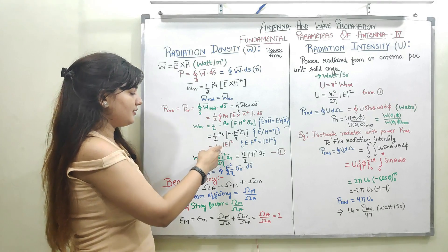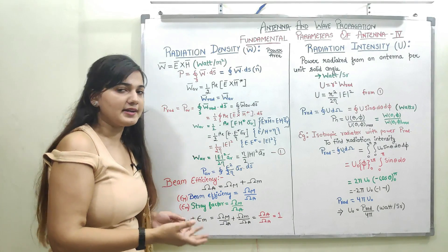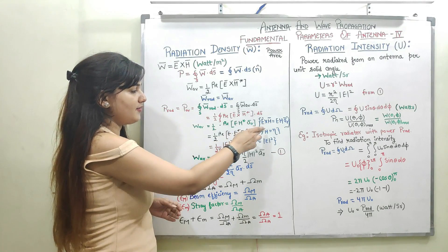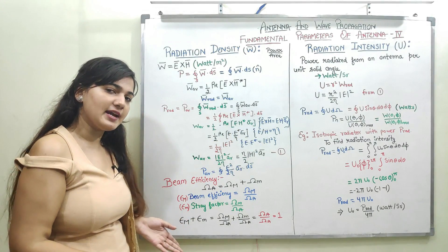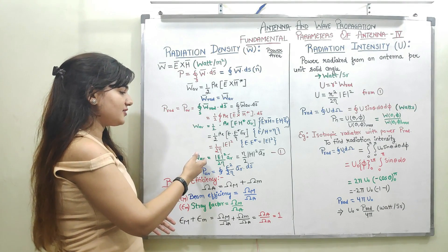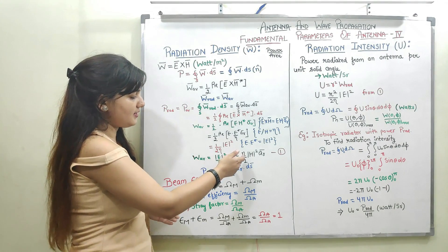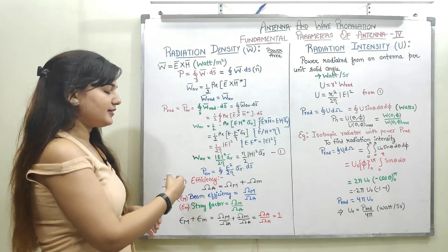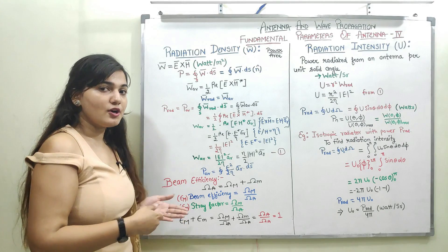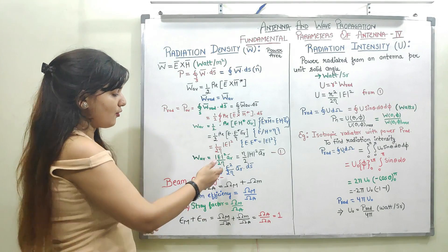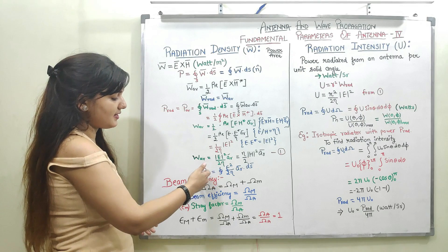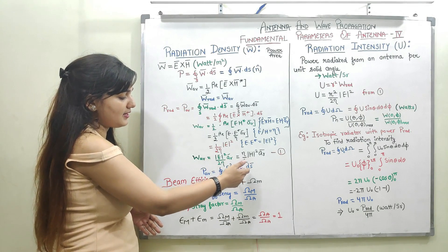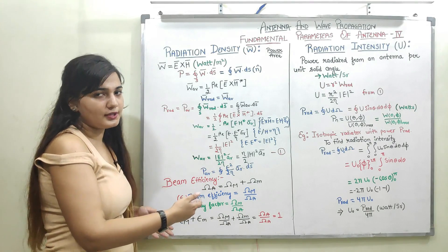We can also represent this average power density in terms of the magnetic field component. Replacing E using the intrinsic impedance relationship, the average power density W_avg equals (η/2) · |H|² · AR. From this, the average power P_avg is the integration of (|E|² / 2η) · AR over the total surface S.